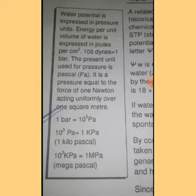So what we get from this statement: 1 bar is equal to 10 to the power 5 Pascal, 10 to the power 3 Pascal is equal to 1 Kilopascal, and 10 to the power 3 Kilopascal is 1 Megapascal. So this is basically what we want to tell.